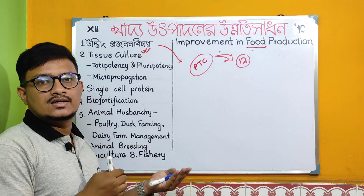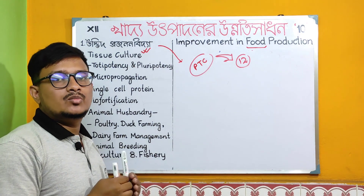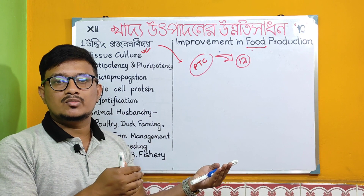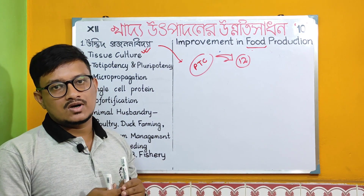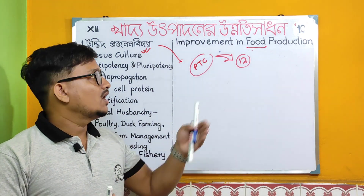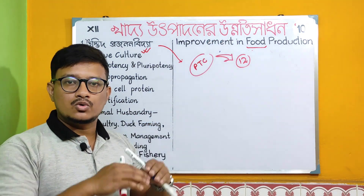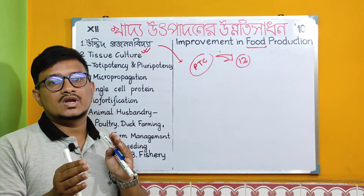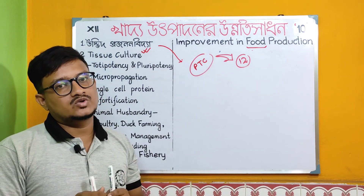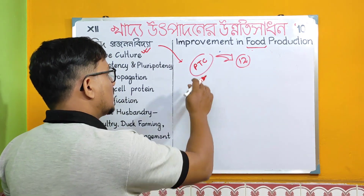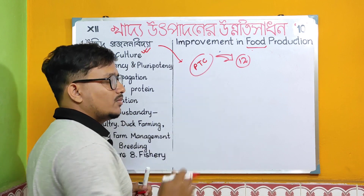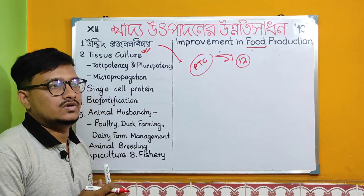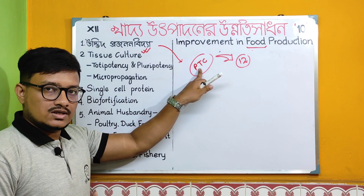Important genes like the PSY gene should be mentioned as examples. The chapter may have logic-based questions or direct factual-based questions. Plant tissue culture is already covered in Chapter 12 — the active video on plant tissue culture covers micropropagation, callus, and totipotency.